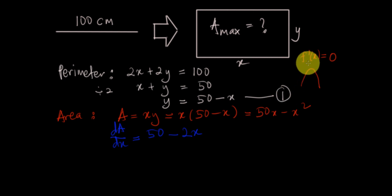It happens when the derivative is equal to 0. So equal to 0, you solve this, you get minus 2x equal to minus 50. So x is 50 over 2 equal to 25.